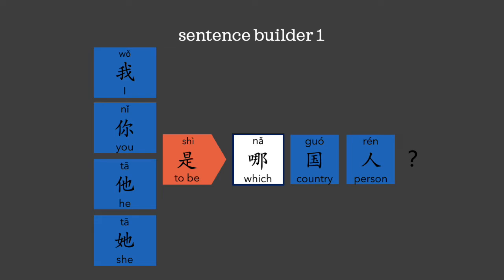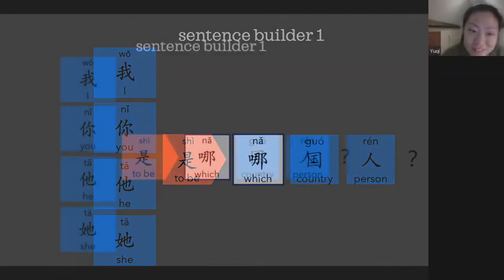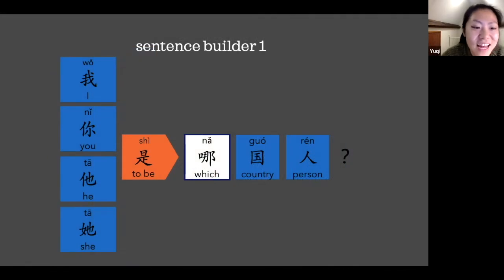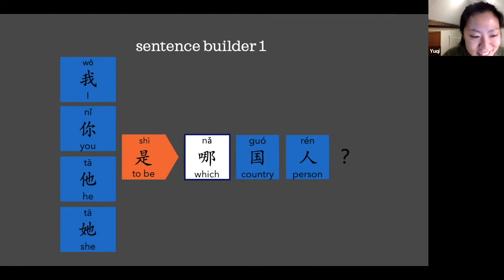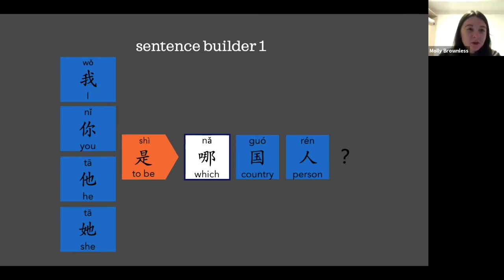None of them had any prior knowledge of Mandarin. I'm going to say something in Chinese — you can tell me either in Welsh or in English. 你是哪国人? What nationality are you, or which country do you come from? That's right.